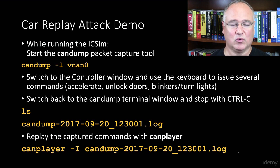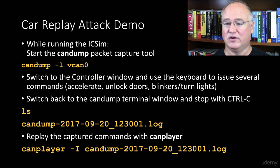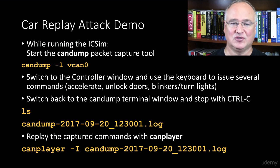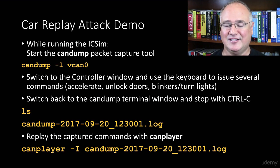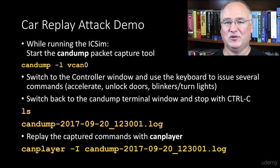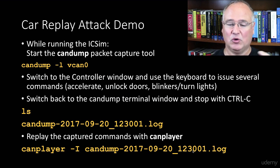We just had to replay the capture commands with can-player, with the -i flag for an input file, candump. Notice we didn't have to specify vcan0 there because we were replaying on the same network we recorded it on. If you wanted to record from vcan0 and play out over a serial connection to a car - slcan0, for example - your serial CAN, if you plug in a real USB-to-CAN device, you would just say slcan0 equals vcan0 to replay what was captured on vcan0 over the serial CAN connection.